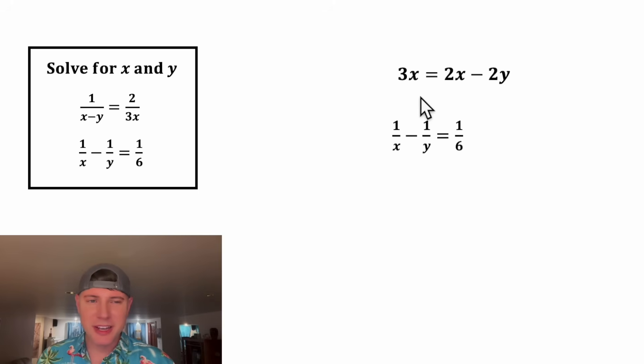Now we have 3x on this side and 2x on this side. Let's move all the x's to the same side by subtracting 2x from both sides. On the left, 3x minus 2x is x. On the right, the two x's cancel, so we're left with x equals negative 2y.